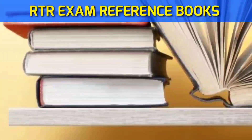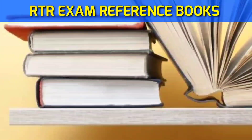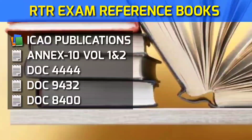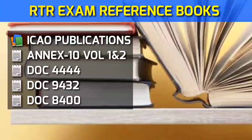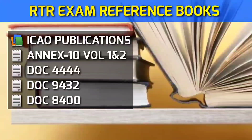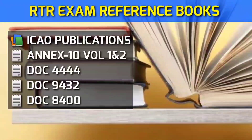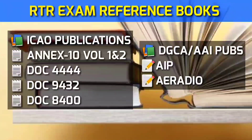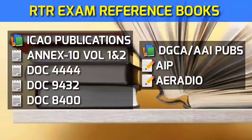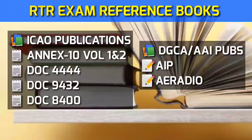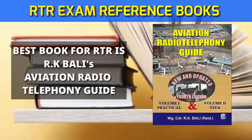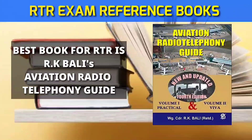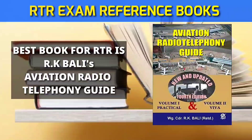Now let's see which books you must refer to. According to the WPC syllabus, there are a number of publications such as ICAO's Annex 10 Volumes 1 and 2, Doc 4444, Doc 9432, and Doc 8400. DGCA and Airport Authority publications also include AIP and AE Radio. However, the best book according to instructors and students is RK Bali's Aviation Radio Telephony Guide, which covers each and everything, and the hard copy is available in bookstores.